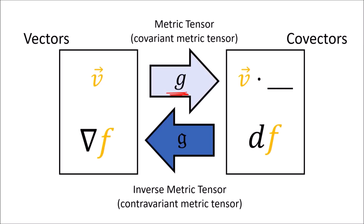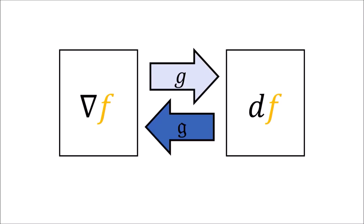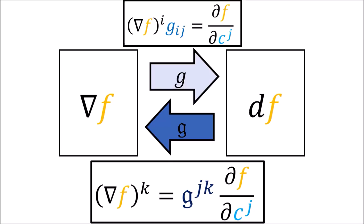To go in the opposite direction from covectors to partner vectors we use the inverse metric tensor, whose components are defined by a specific equation. More concretely, to go back and forth between the components of del f and df we can use two formulas with the metric tensor components and inverse metric tensor components.